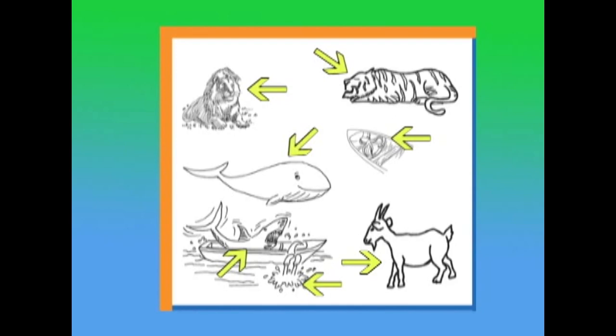Now of these seven animals, how many live in water? There's the shark, the whale, the octopus. That's all. So we have a subset of three animals that live in the sea.